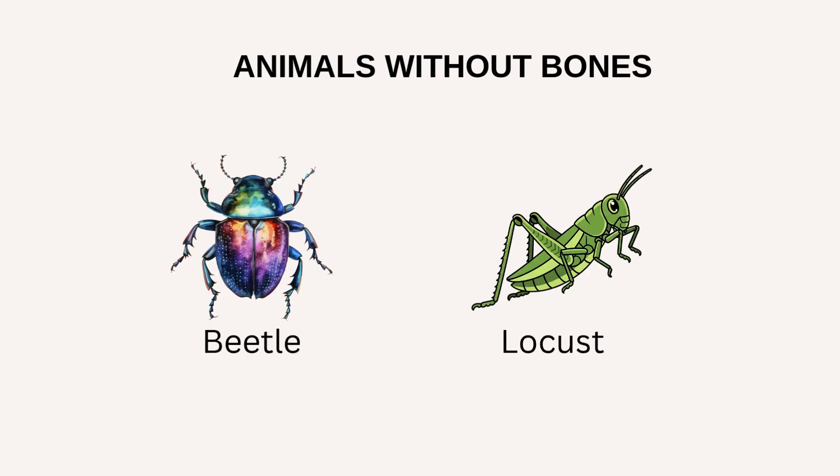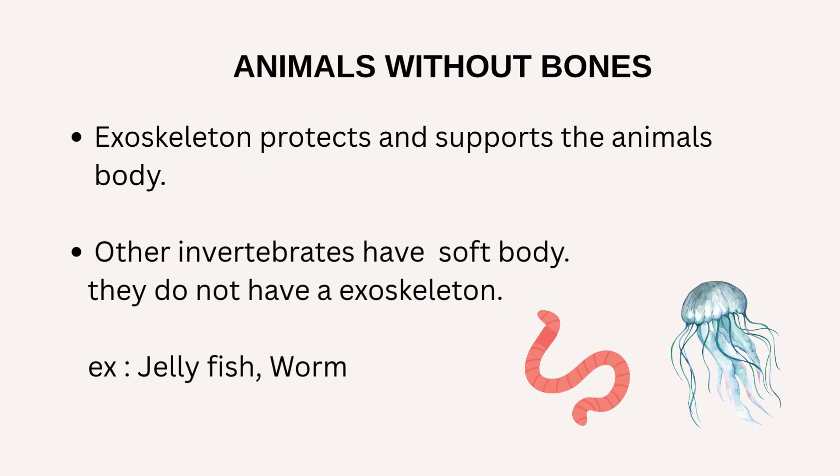Examples for animals without bones include beetle and locust. Exoskeleton protects and supports the animal's body. Other invertebrates have a soft body and do not have an exoskeleton. Examples are jellyfish and worm.